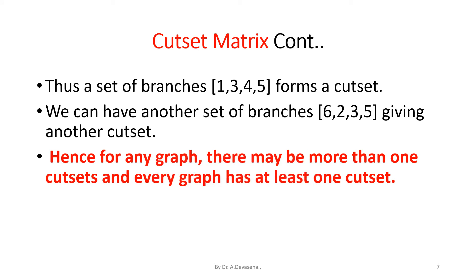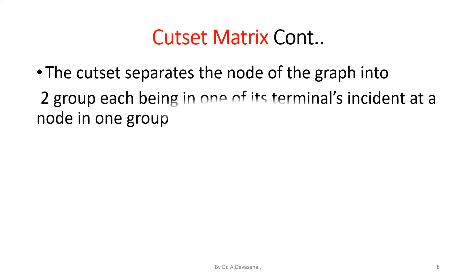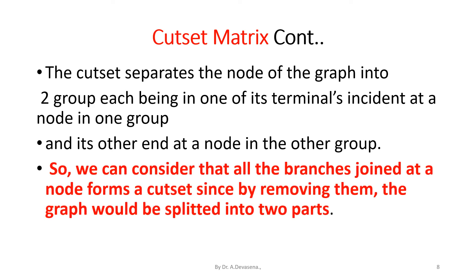Hence, for any graph there may be more than one cut set. The cut set separates the nodes of the graph into two groups, each branch having one of its terminals incident at a node in one group and its other end at a node in the other group. We can consider that all the branches joined at a node form a cut set, since by removing them the graph would be split into two parts.